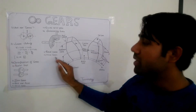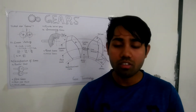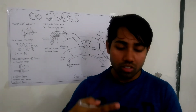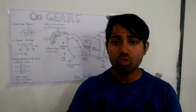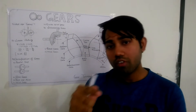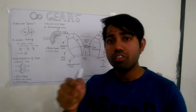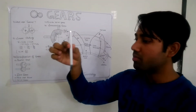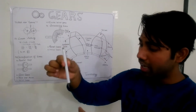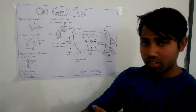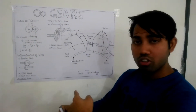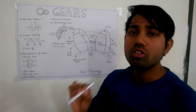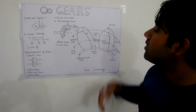Miter gear means two gears of the same size. These gears are used to transmit power from one shaft to another shaft which are at right angles. The axes of the two shafts meet at a common point, so they intersect each other.